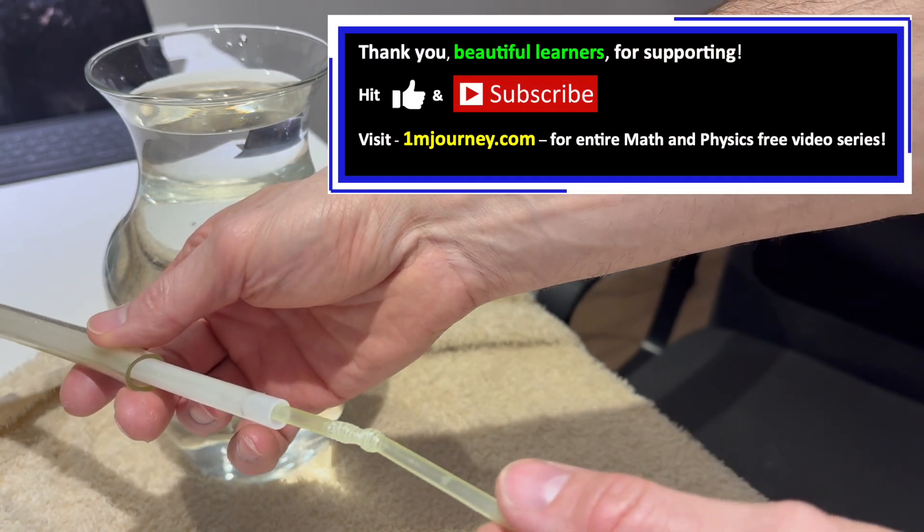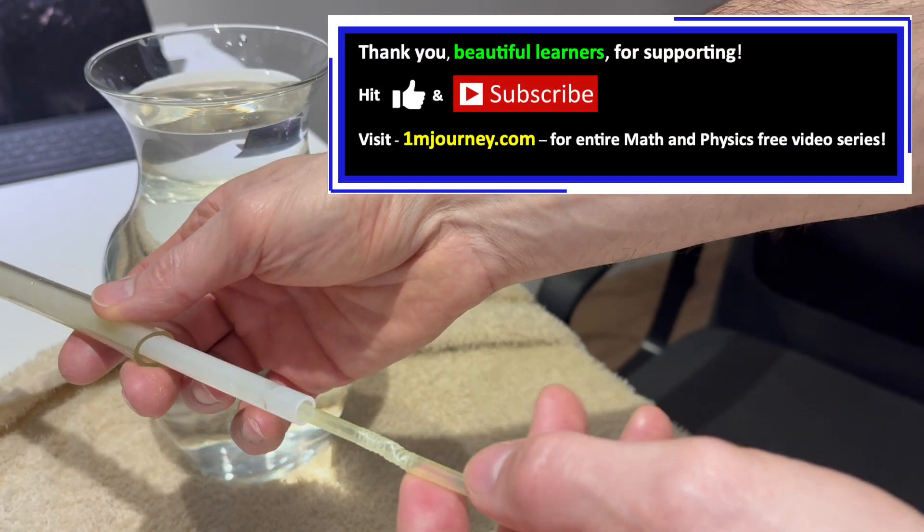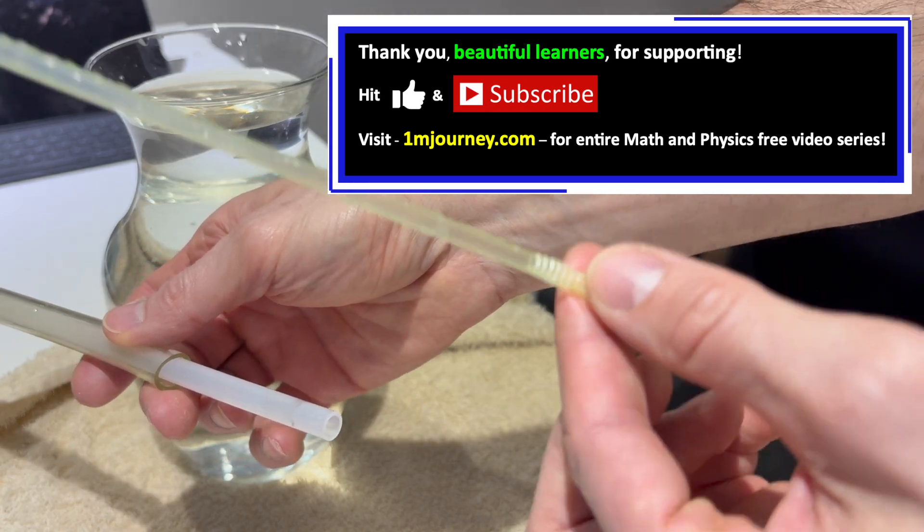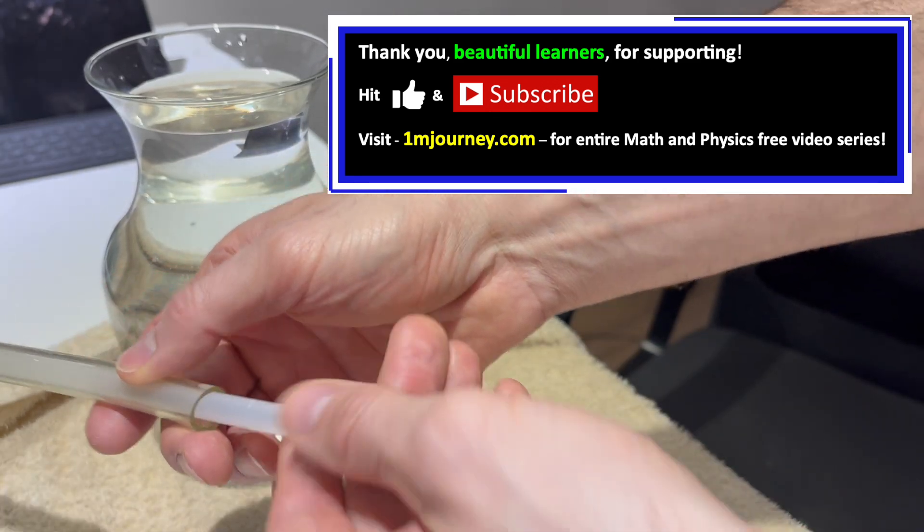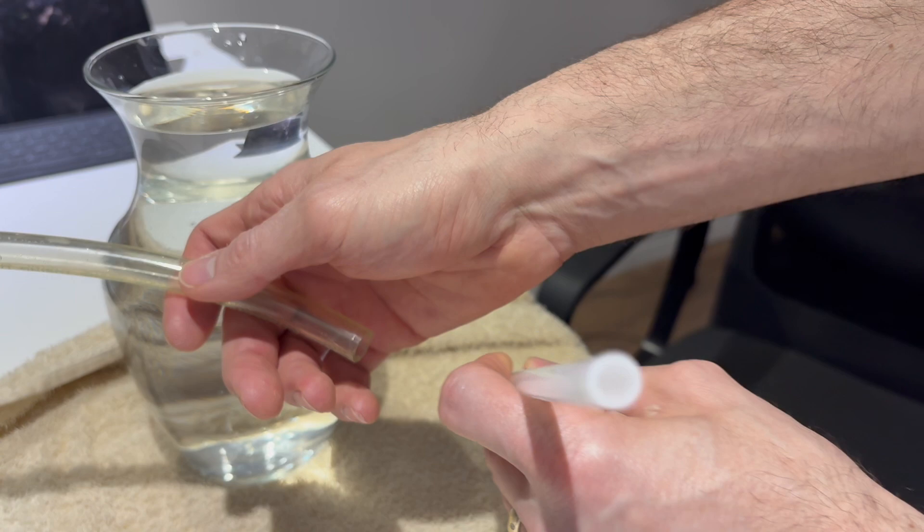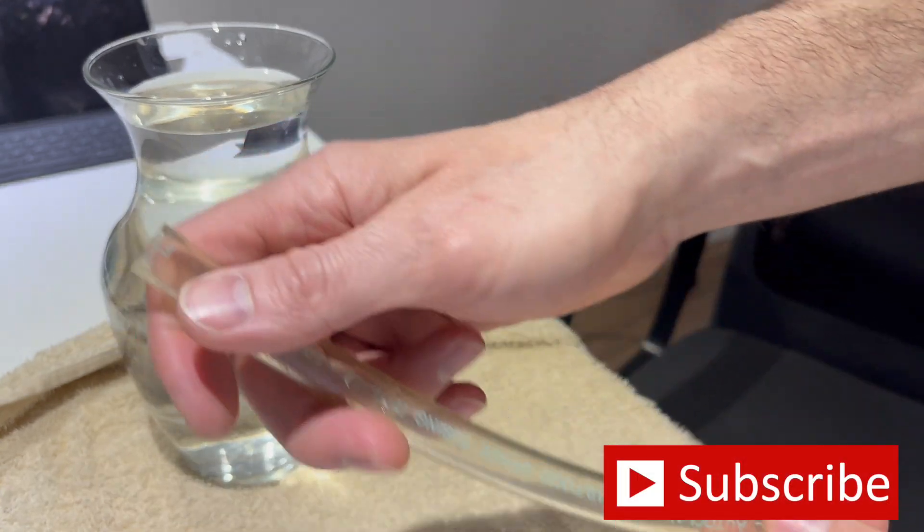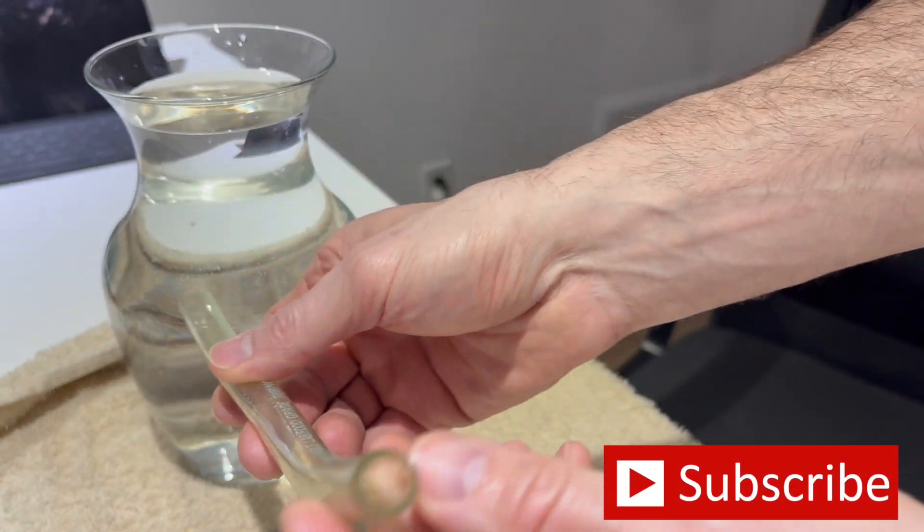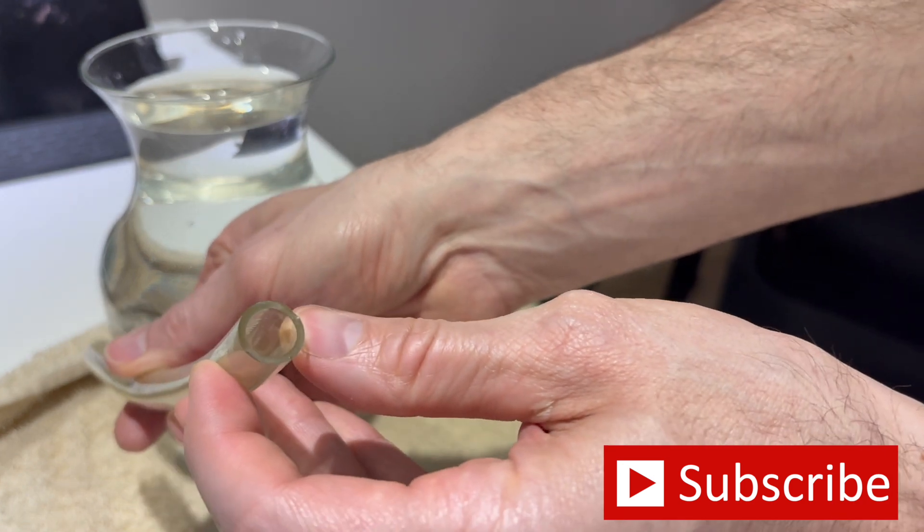Alright, so here are three different sizes of straws. A regular kind of drinking straw right there, one of those thick bubble tea straws, and then here's a super monster thick tubing here, as you can see there.